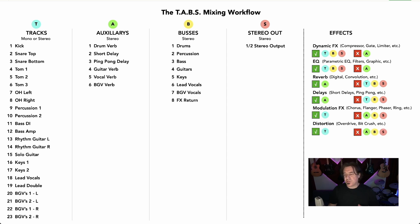And finally, we have distortion. Same thing applies — when you're using distortion, overdriving, or bit crushing, you're generally doing that on a track. You're not going to have an auxiliary send that is a distortion or bit crush. You'd generally do that on the track level, same with the bus, same with the stereo out.